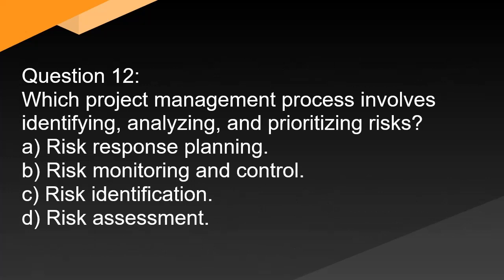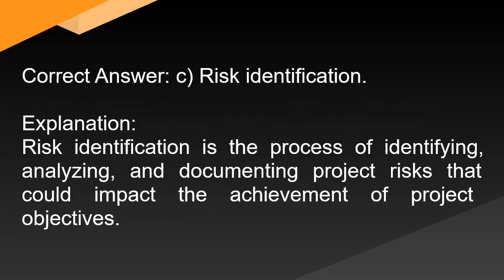Question 12: Which project management process involves identifying, analyzing, and prioritizing risks? A. Risk response planning. B. Risk monitoring and control. C. Risk identification. D. Risk assessment. Correct answer: C. Risk identification. Explanation: Risk identification is the process of identifying, analyzing, and documenting project risks that could impact the achievement of project objectives.